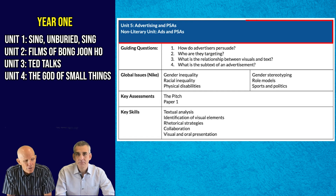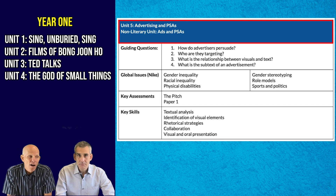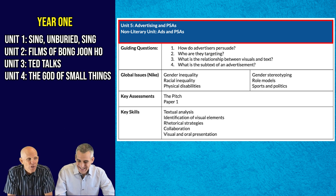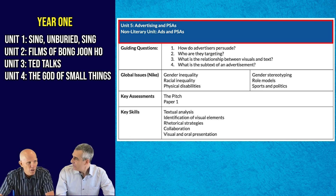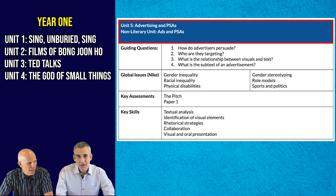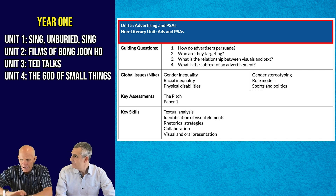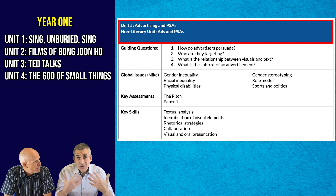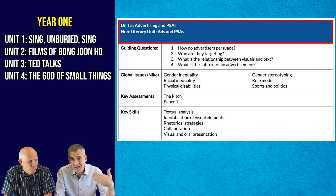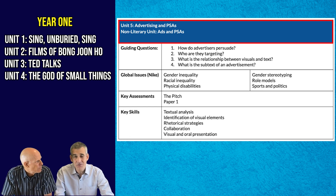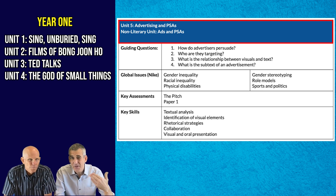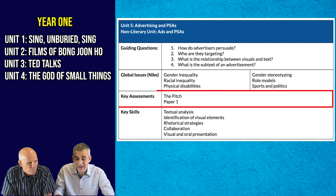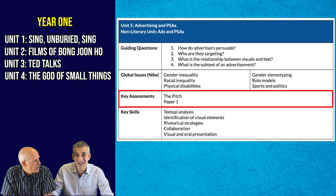We then follow that with a unit on advertising and PSAs. This unit has an incredible choice board of ad campaigns that create a great tapestry of powerful ads. We go through a we-go-you-go approach — we take one ad campaign and show the kids, build those strong visual skills, and then give them opportunities to explore campaigns we've curated for them, but they do all the heavy lifting and all the thinking. We actually do a nice creative activity where we do an advertising pitch. It's super fun and kids are getting tons of skills.